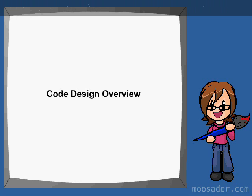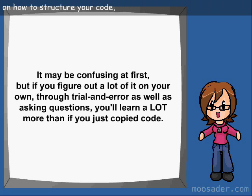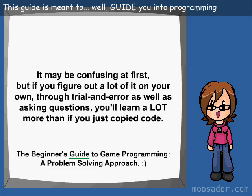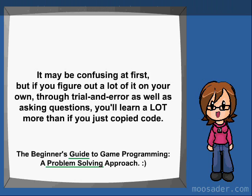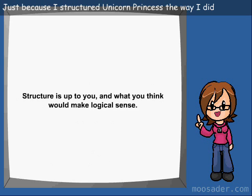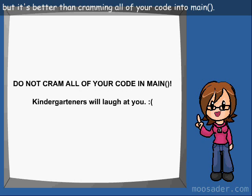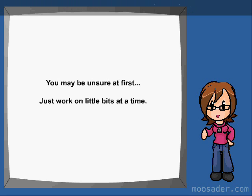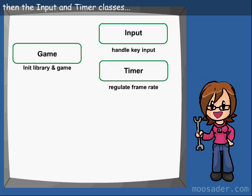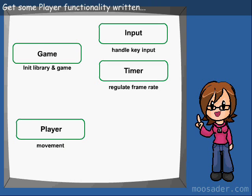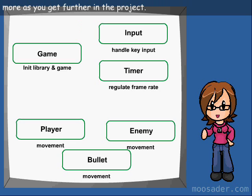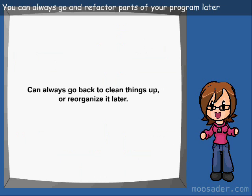That's it for the overview of code design for the most part. Keep the objects I mentioned in mind while designing your own program structure. This guide is meant to push you in the right direction on how to structure your code, and not just to hand out code that you will blindly follow and therefore not completely understand. The way you structure it is largely up to you. Just because I structured Unicorn Princess the way I did does not mean it's the best way, but it's better than cramming all of your code in main. Even if you're not sure how to start, start with something. Build up a little bit at a time — start with your game class to initialize your library, then the input and timer classes, and then maybe add the player class. Go back and update your object functionality more as you get further in the project. You can always refactor parts of your program later once things become more clear.